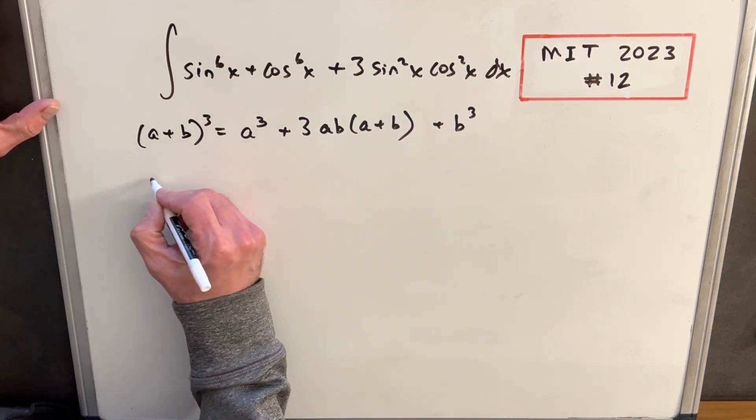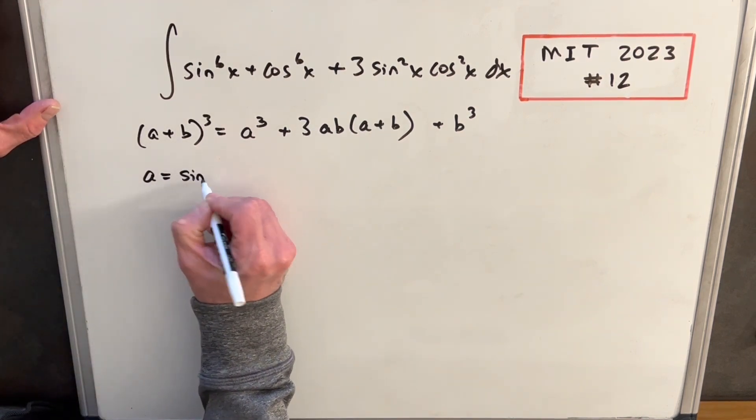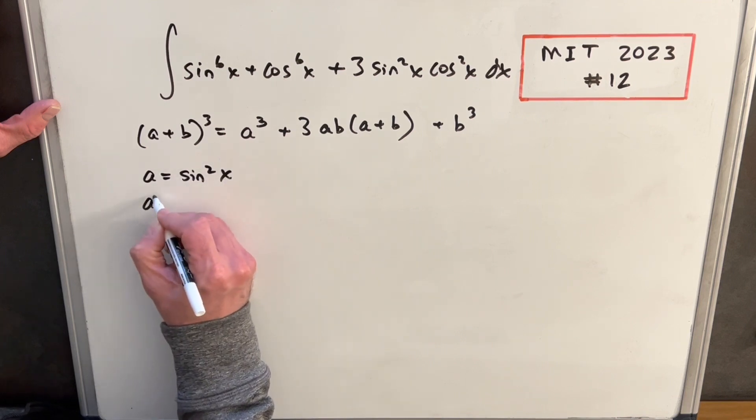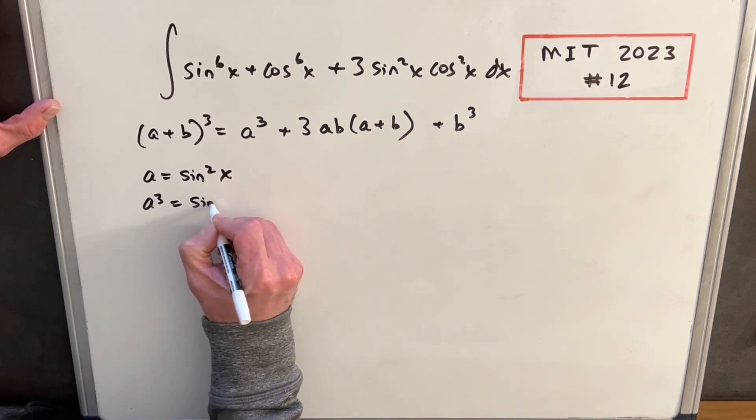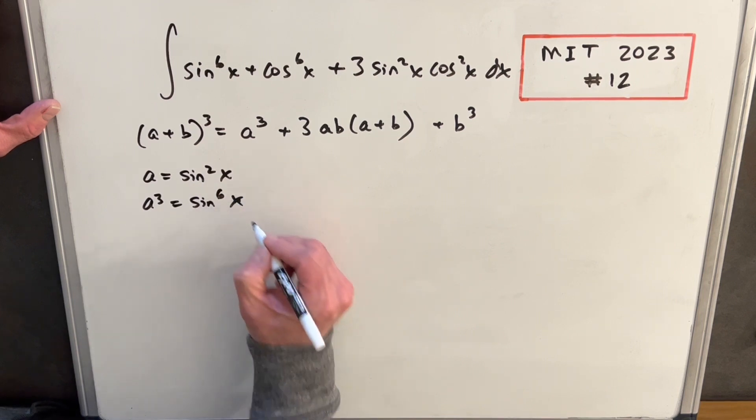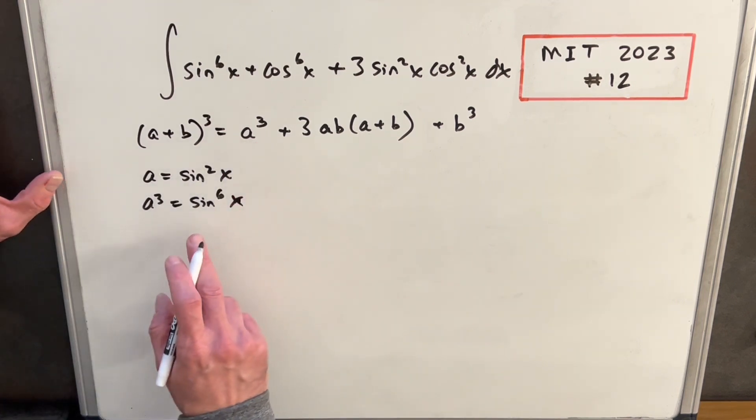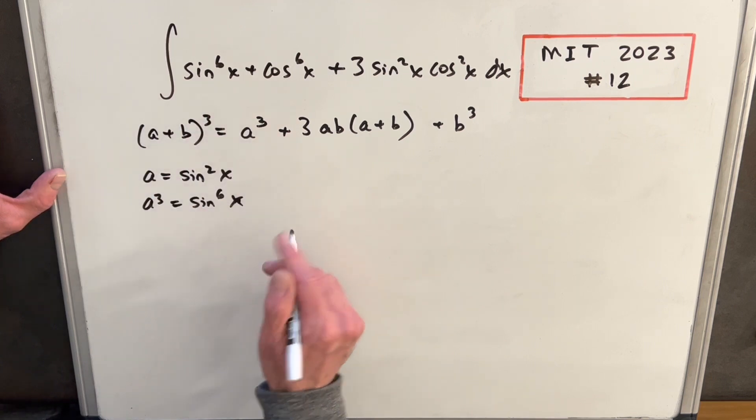Now, let's say our a, if our a is sine squared x, then a cubed is going to be sine to the 6x. So with our a cubed, we're matching sine to the 6x right there.